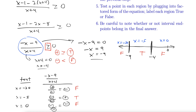The true region is our answer, but we must be careful with endpoints. Negative nine came from the numerator. Since the inequality is greater than or equal to, we include negative nine in our answer because of the 'or equal to' part. Negative four came from the denominator, so no matter what, it cannot be included — it's an asymptote and would force division by zero. Our final answer in interval notation is [-9, -4): starting at negative nine, included, up to negative four, not included.